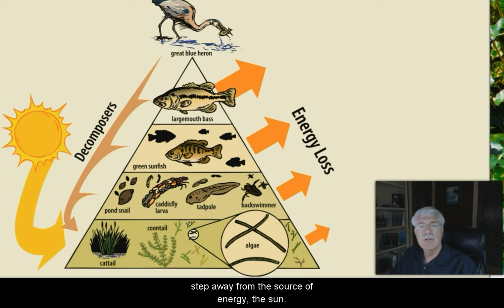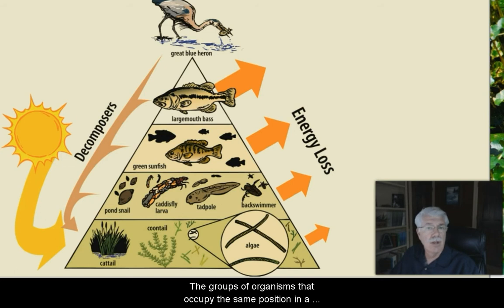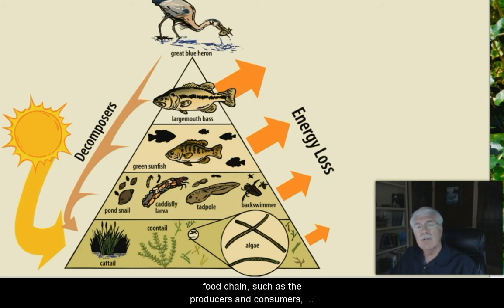Some energy is lost at each step away from the source of energy, and the ultimate source of energy is the sun. The groups of organisms that occupy the same position in a food chain, such as the producers and consumers, are called trophic levels.